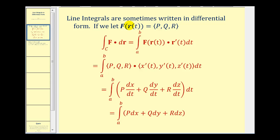If we let our vector field equal f of r of t, where each component of f—p, q, and r—is written as a function of t, we can show where the differential form comes from starting with the line integral of a force field or vector field as discussed in the previous video, as we see here in the first line.